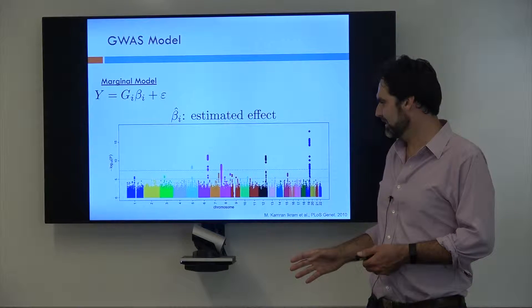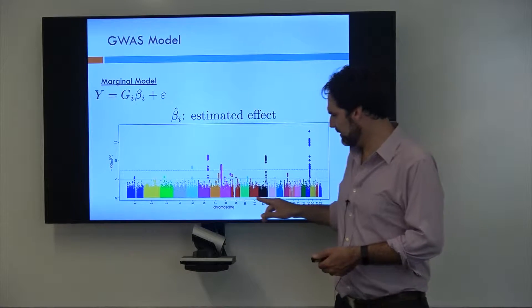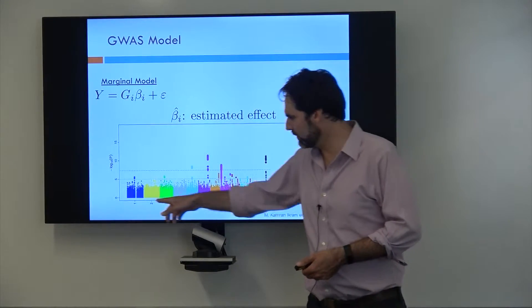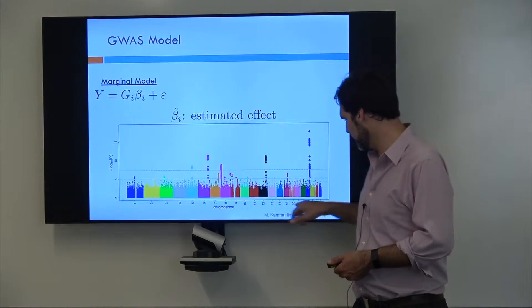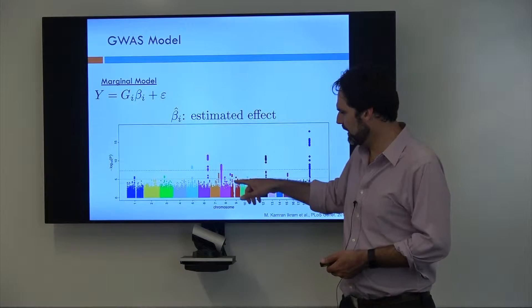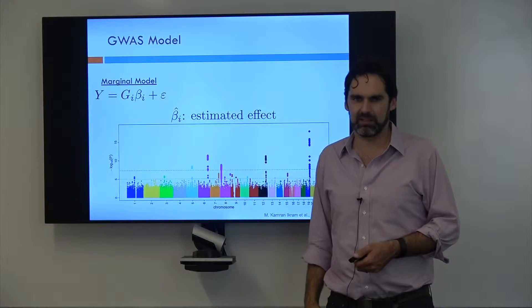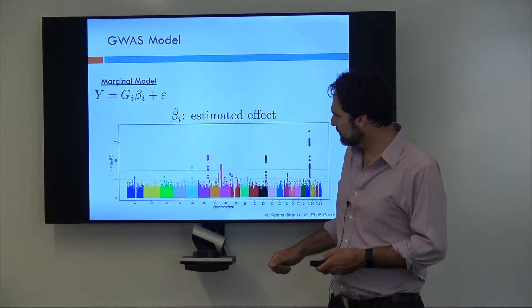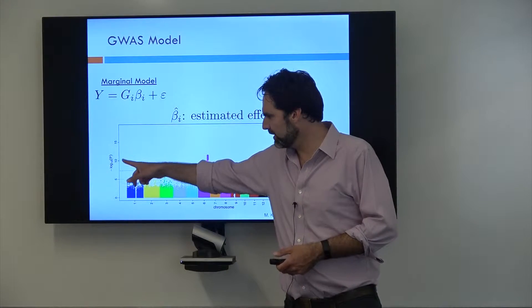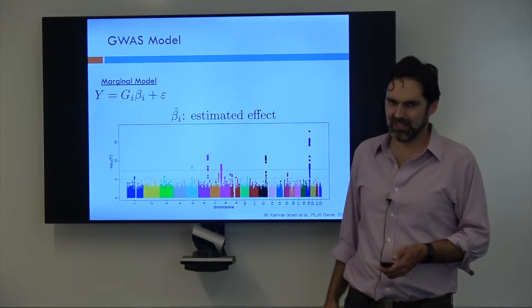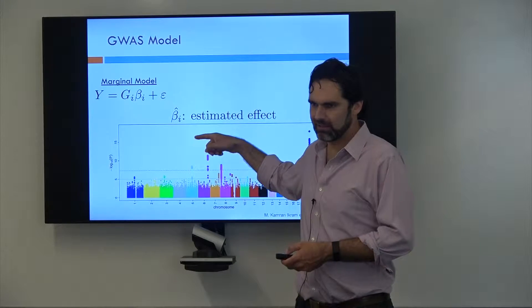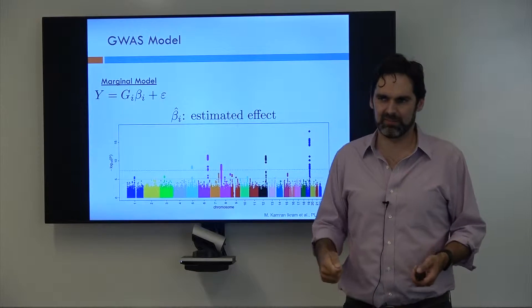On this plot, the x-axis represents the position. So here you have chromosome one, two, three, all the way through 22. Each dot represents a different variant that was tested when they did the GWAS. The y-axis is the negative log 10 of the p-value. As this value gets higher, it's like having a smaller and smaller p-value.